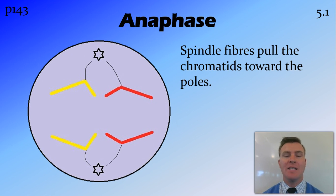During anaphase, those spindle fibers then pull the chromatids towards the poles. So those sister chromatids get pulled apart and dragged towards the centrioles that are at the poles by their spindle fibers.